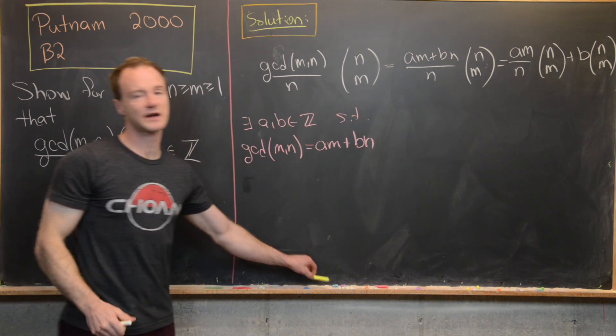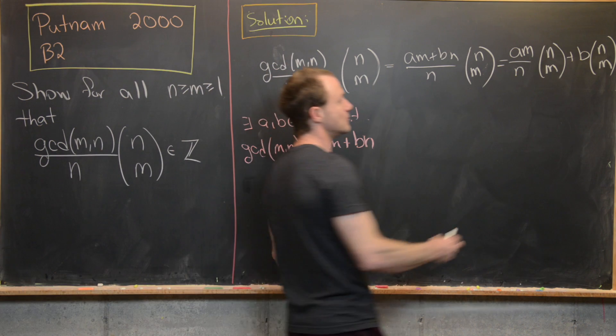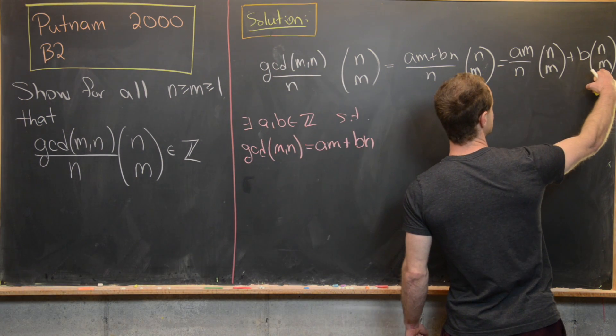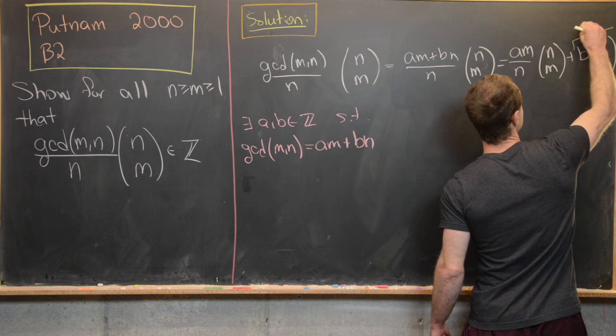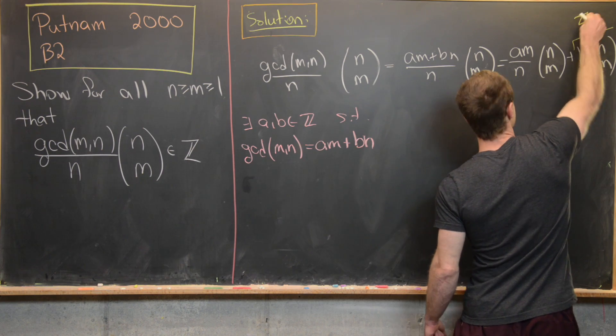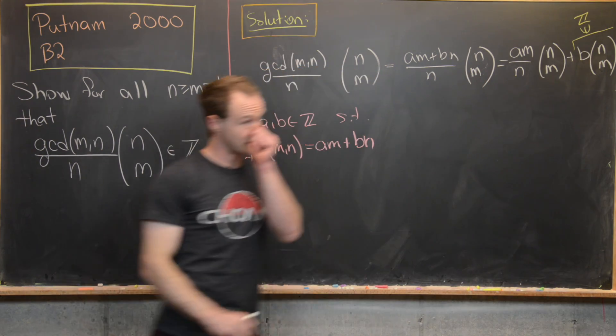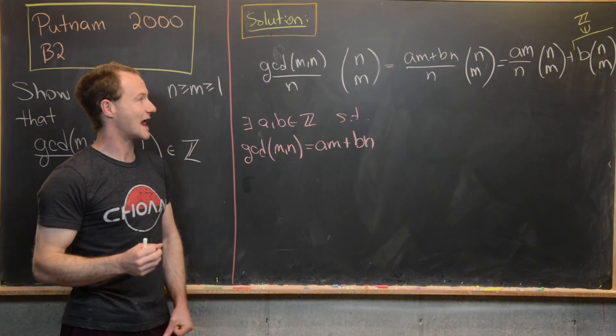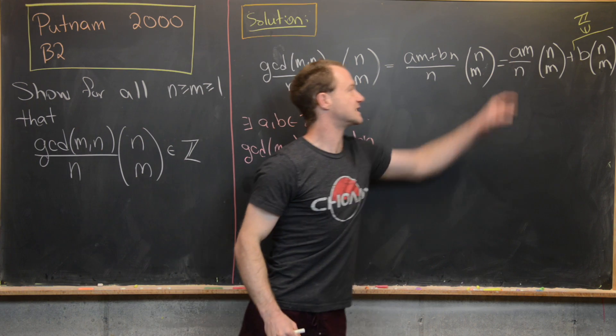And now at this stage, we can already see how this is shaping up. Because (n choose m) is an integer, b is an integer, which means this entire term is an integer. So we probably don't need to rewrite that ever again. And we can just focus on this guy right here.